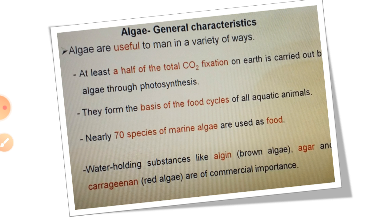Algae are useful to man in a variety of ways. At least half of the total carbon dioxide fixation on earth is carried out by algae through photosynthesis. They form the basis of food cycles of all aquatic animals. Nearly 70 species of marine algae are used as food, including porphyra and sargassum. Water-holding substances like algin from brown algae, agar and carrageenan from red algae are of commercial importance.